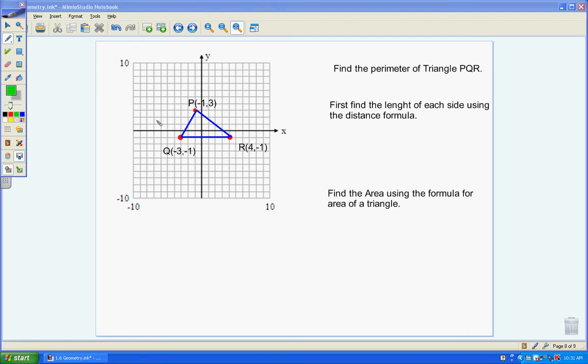So here we have a triangle, and we need to find the perimeter of this triangle. However, we do not know the length of each side.